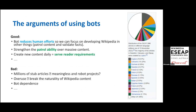Maybe some of you here will accept bots or you will deny them — you don't want bots working on your project. There are good arguments on both sides. A good side is that bots can reduce human effort so we can focus on developing other things. We have 59 million articles in over 318 languages — that's massive content. That's why we need bots to detect and manage articles.